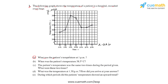Question a asks us to find the patient's temperature at 1 pm. If we observe the horizontal axis, at 1 pm we identify the corresponding point and observe the vertical axis to find the temperature. Since this point is equidistant from 36 and 37, we can conclude that at 1 pm the patient's temperature was 36.5 degrees Celsius.